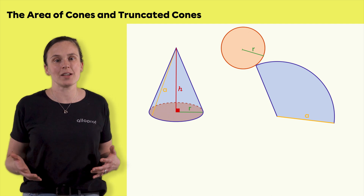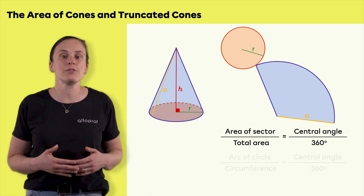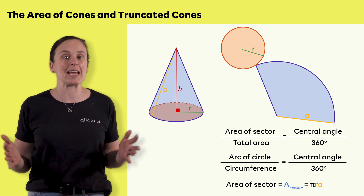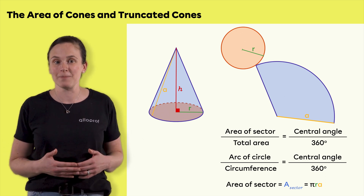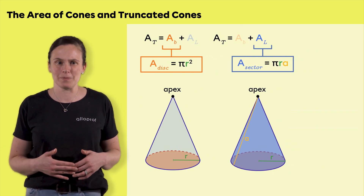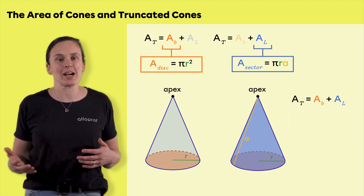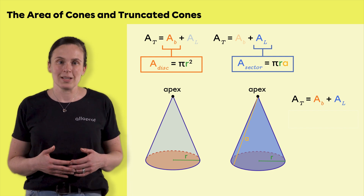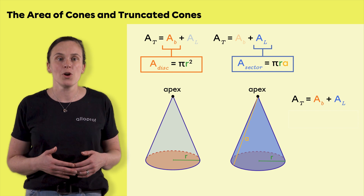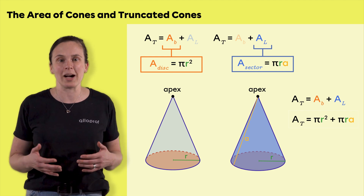The cone's height is not used when calculating the total area. Since the lateral face of a cone is a sector of a circle, we use proportions and algebraic calculations to get the formula pi times r times a. This enables us to calculate the area of the sector that is the lateral area. Since the faces that make up a cone are always a circle and a sector of a circle, the cone's total area is always equal to pi r squared plus pi r a.